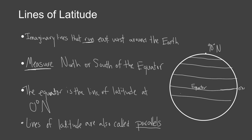The south pole would be 90 degrees south. As we go further north of the equator the numbers get larger, moving toward 90 — for example 20 degrees north, 40 degrees north, 80 degrees north. And as we go south of the equator the numbers get larger again but labeled south: 20 degrees south, 40 degrees south, 80 degrees south.